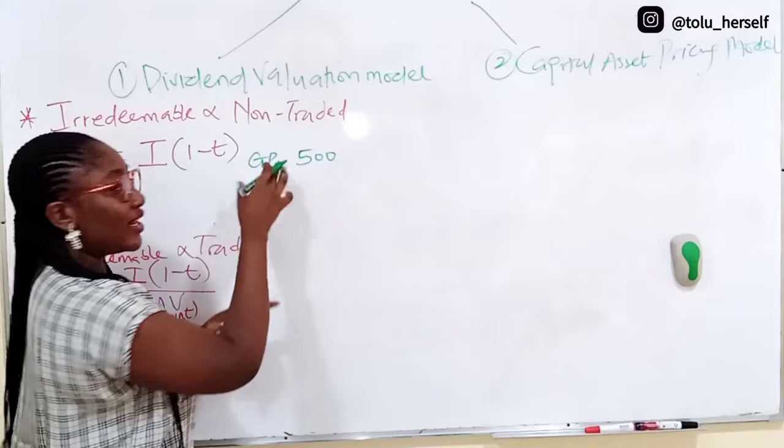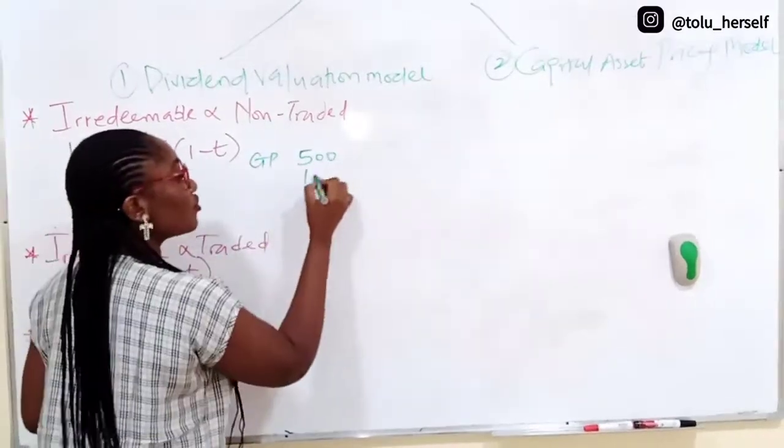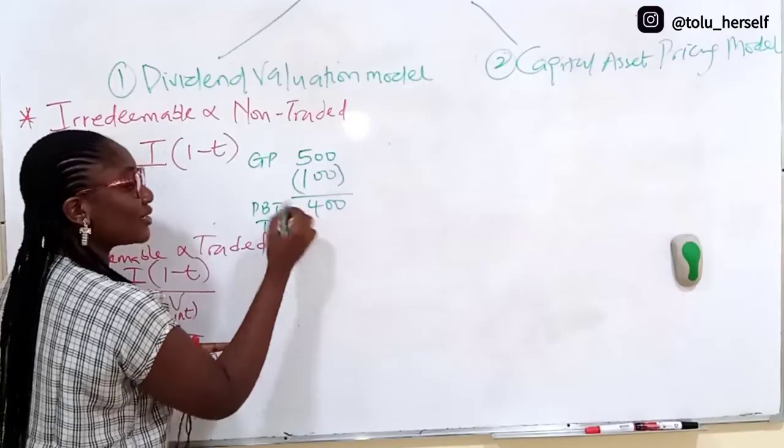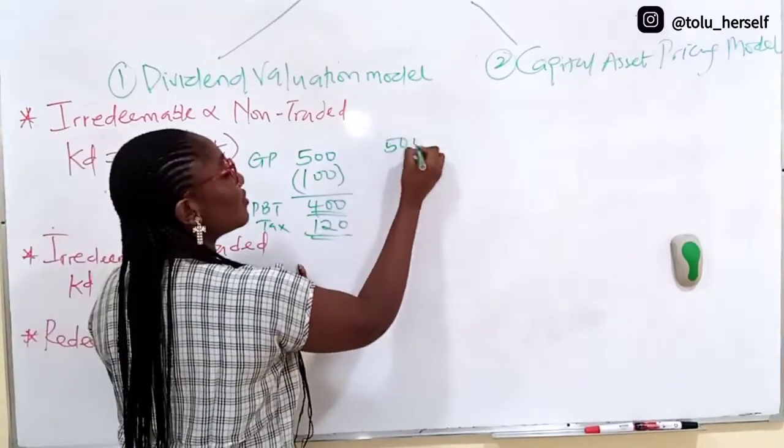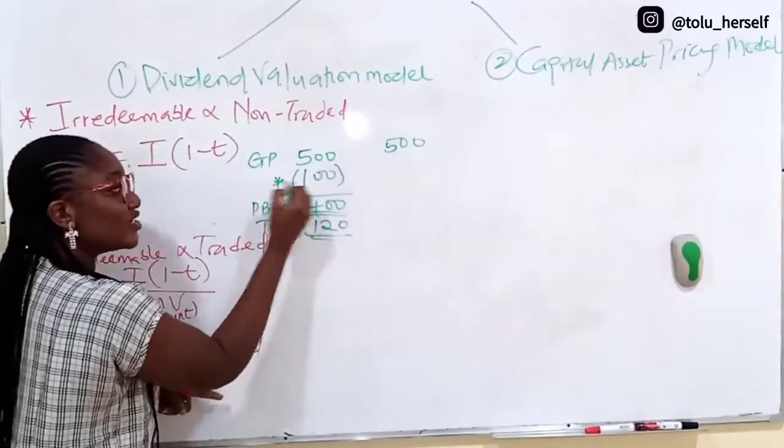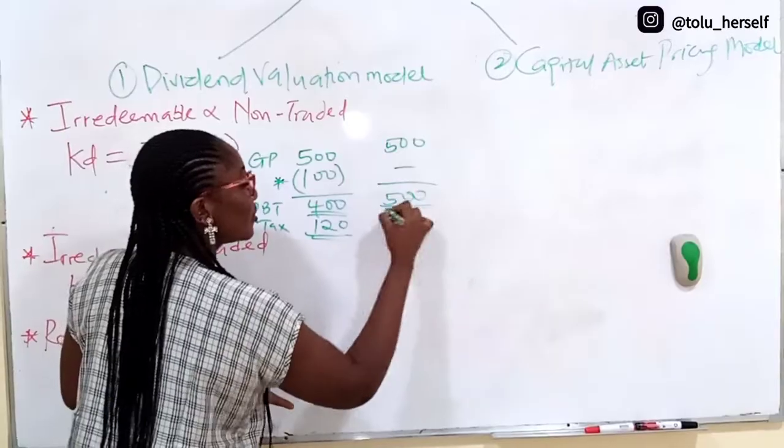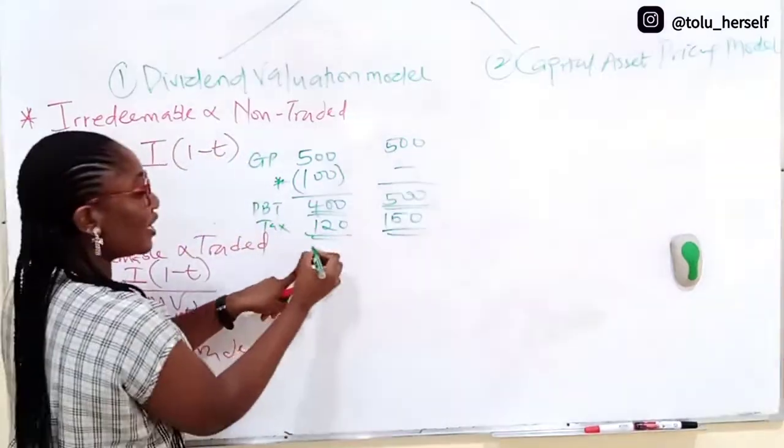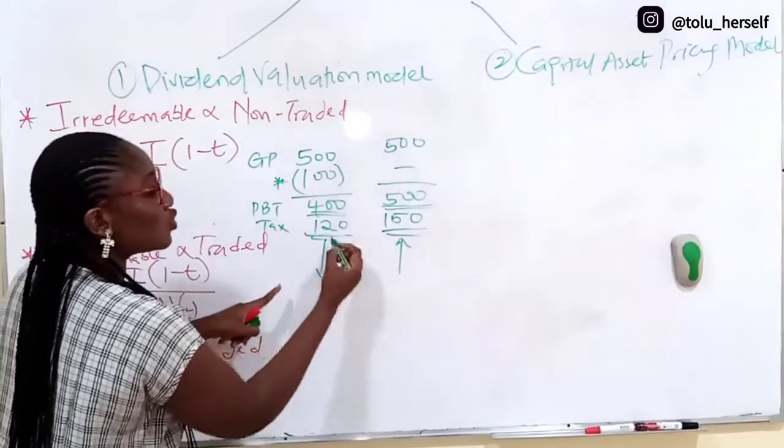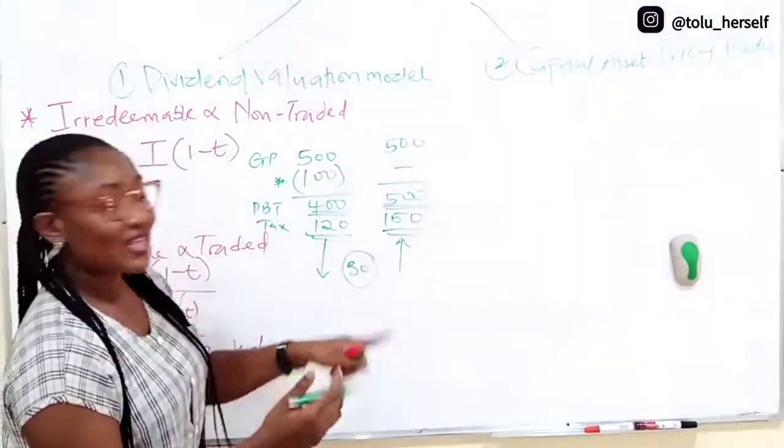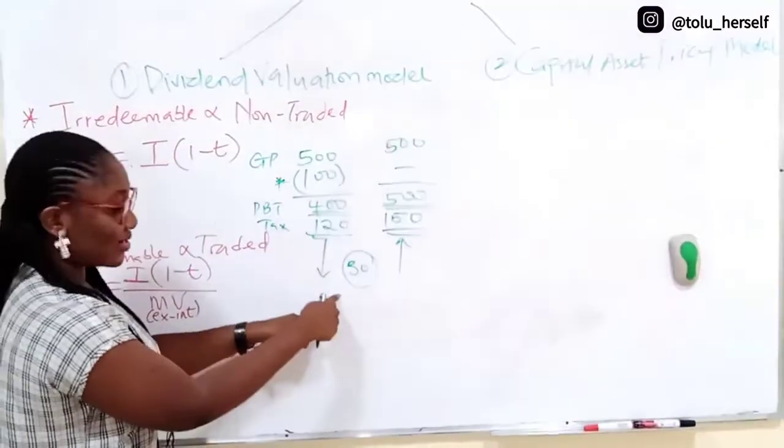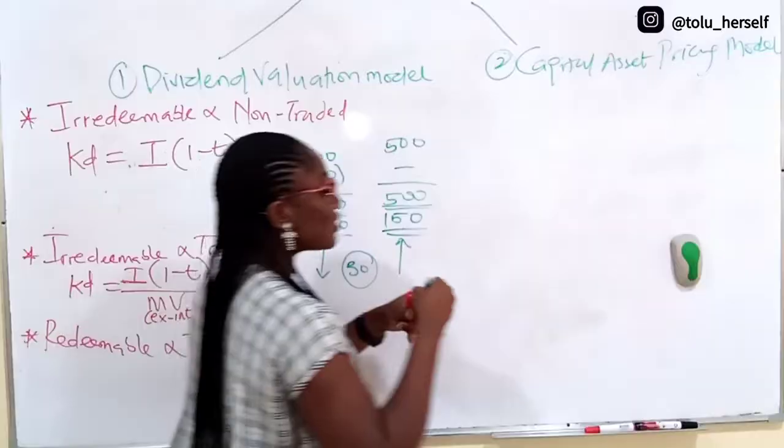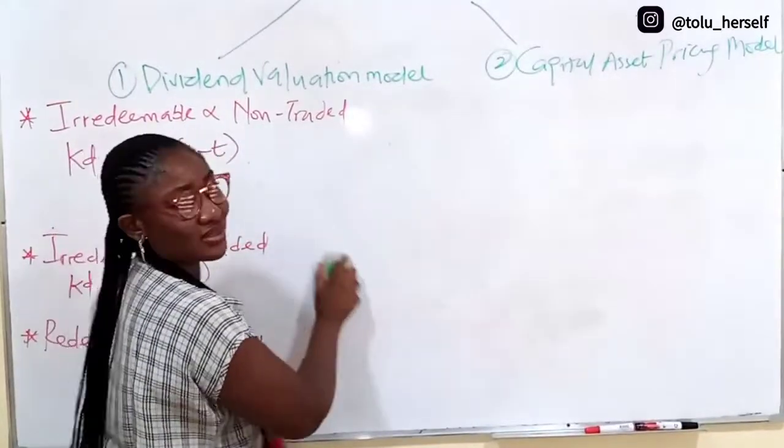Let's say you have gross profit of 500 naira. In scenario one, you less interest of say 100 naira, this means you have 400 left as profit before tax. When you apply tax at 30%, you have 120. In the second scenario with gross profit of 500 naira, if you don't less this interest and tax the 500, you have 150, which is 30% of 500. Here you are paying lower tax, the difference of 30 is tax saved as a result of interest deduction. There is tax shield from debt, because 30% of this 100 naira gives you tax savings.